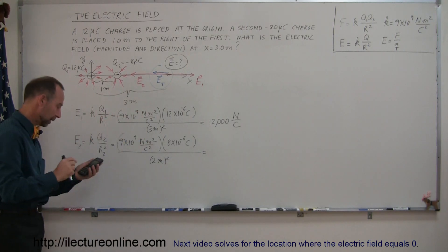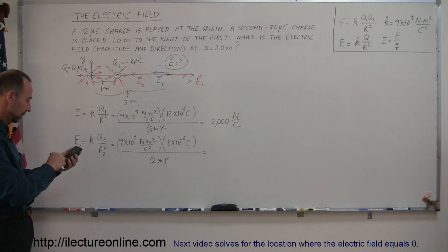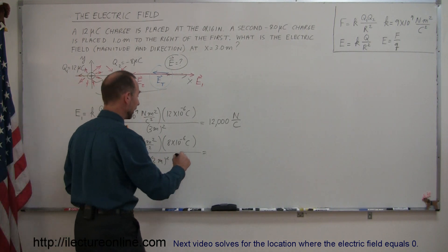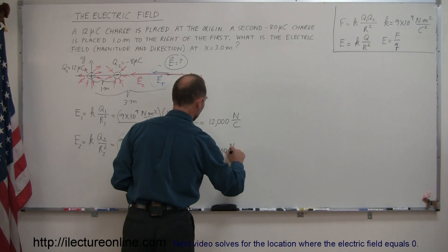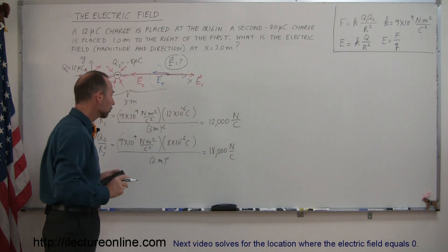Plugging that into the calculator, what do we get? We get 9 E to the 9th times 8 exponent 6 minus, and then we divide that by 4, and we get 18,000 newtons per coulomb.